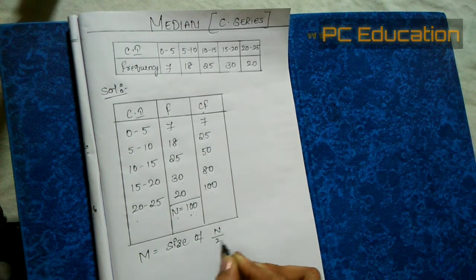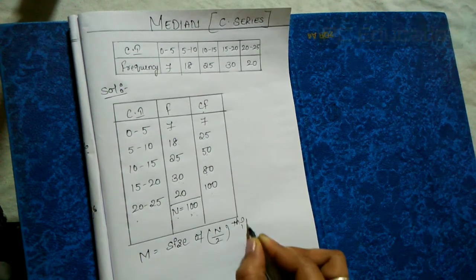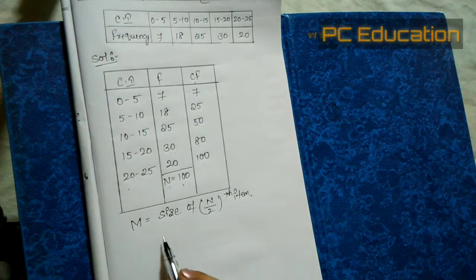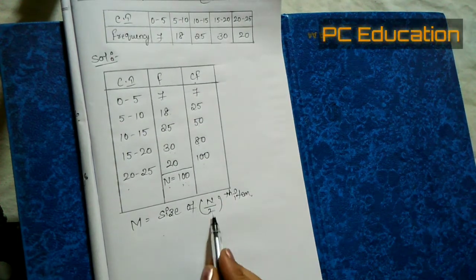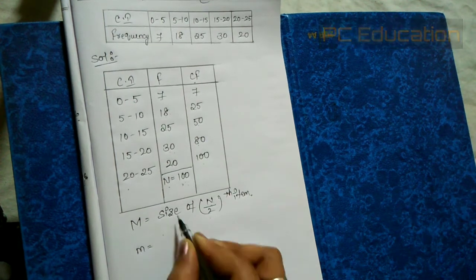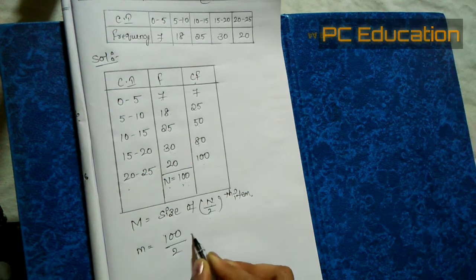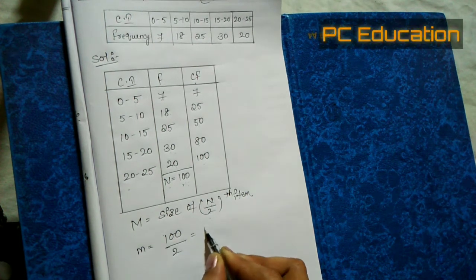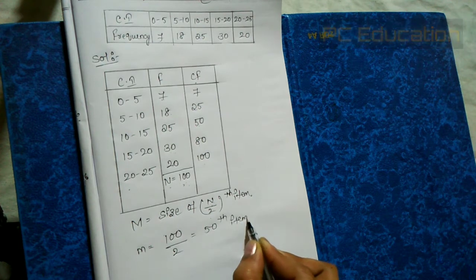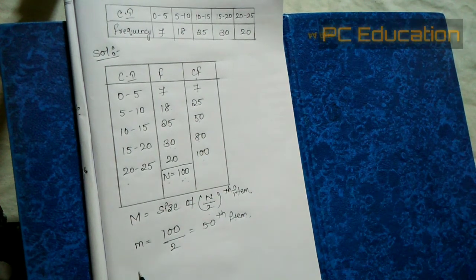For doing the median in a continuous series, we apply the formula: median = size of N/2th item. Here N is 100, so 100 divided by 2 gives us the 50th item.